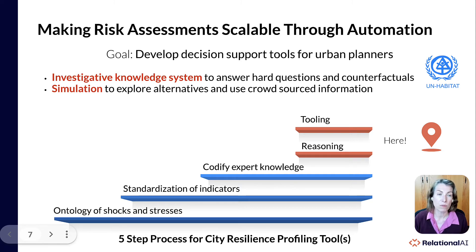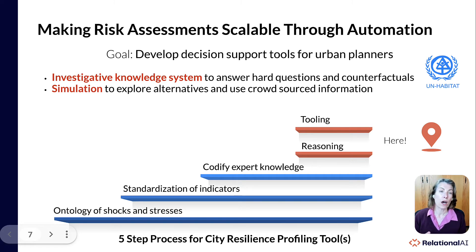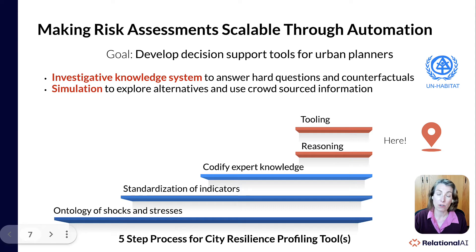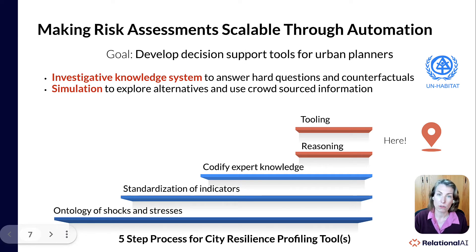They had a five-step process to get to the city resilience profiling tools, starting with understanding the hierarchies and meaning — the ontology for shocks and stresses — then doing standardization of indicators for stress, codifying urban development expert knowledge, and then working on reasoning and tooling. The team is now in the phase of tooling and reasoning.